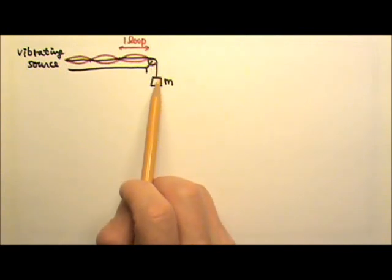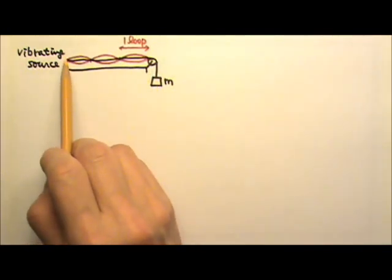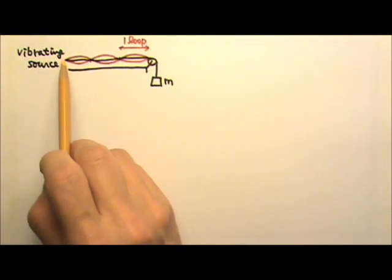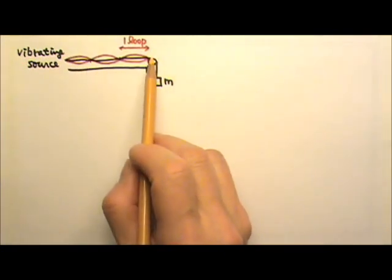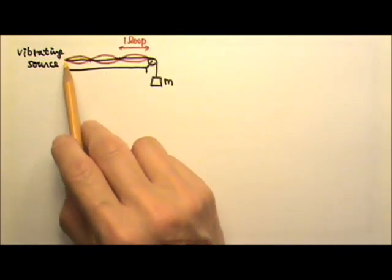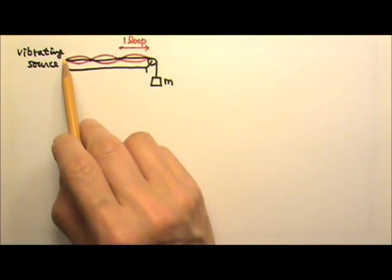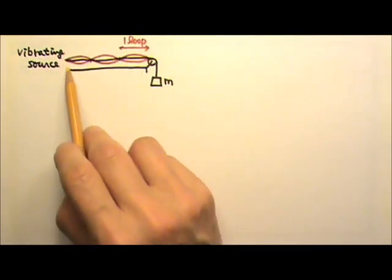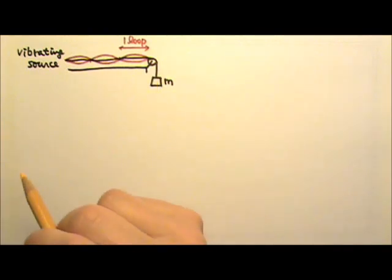Let's say this string with a weight hanging on the other side has this end connected to a vibrating source. So we get periodic vibration over here, creating a periodic wave coming in. The reflected periodic wave and the incoming periodic wave would interfere. When the condition is right, when there is resonance, we may see standing waves like this.